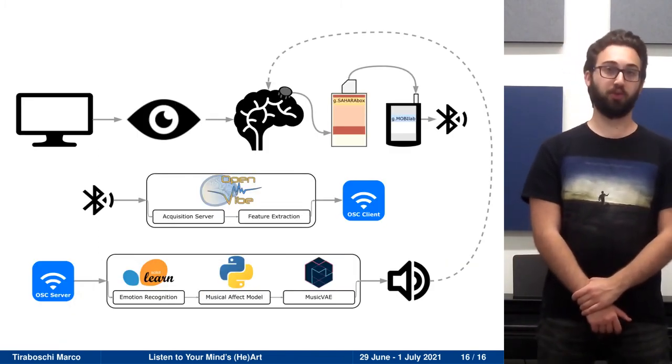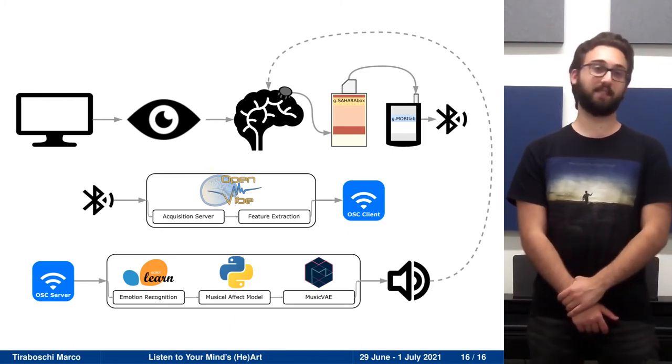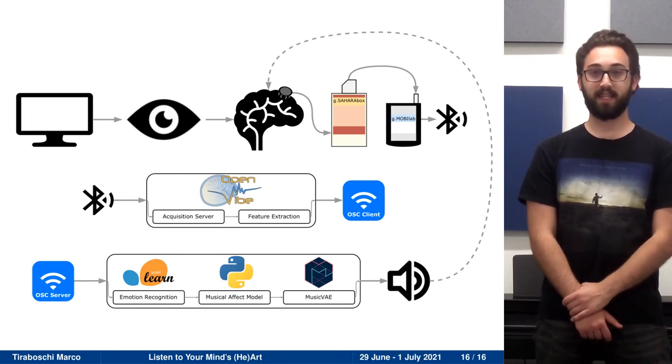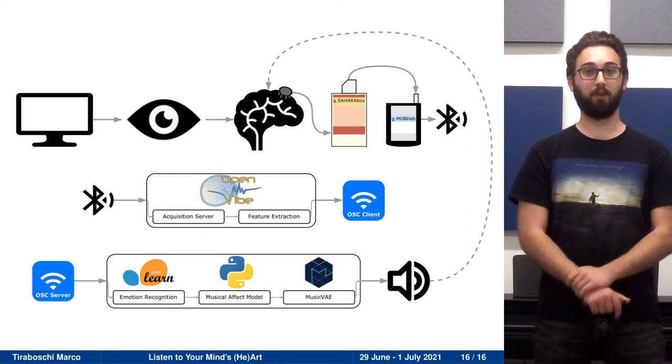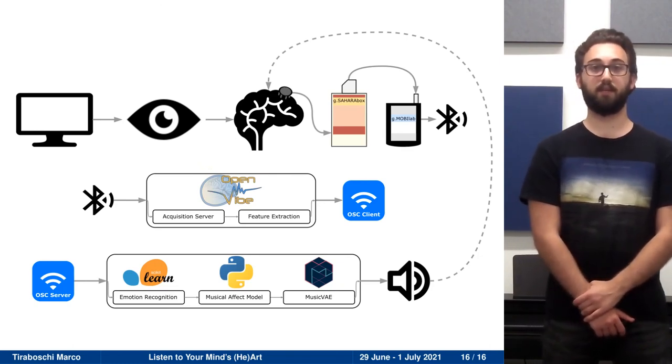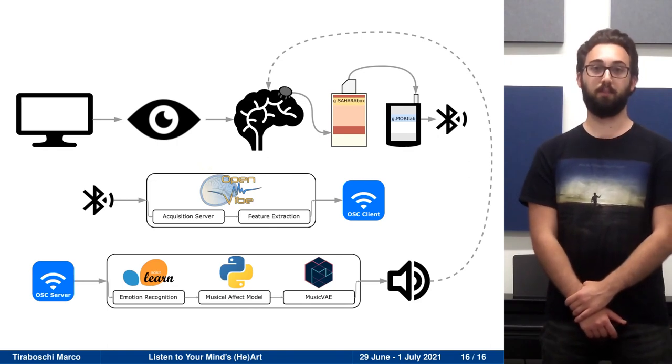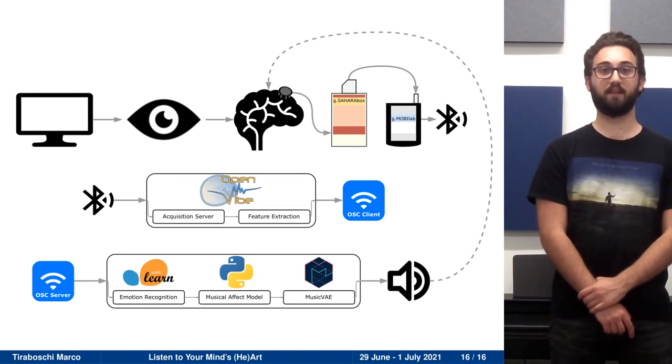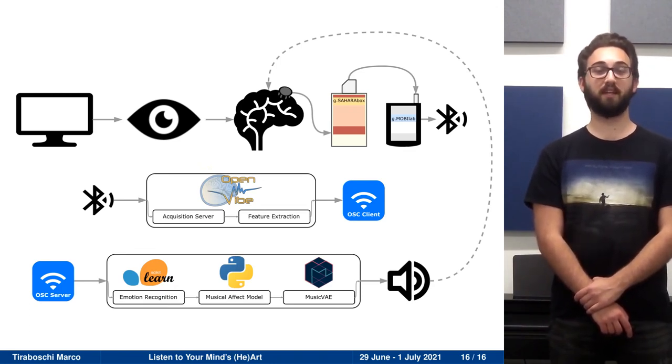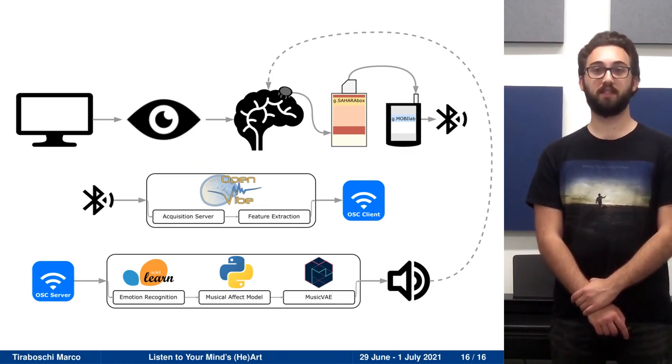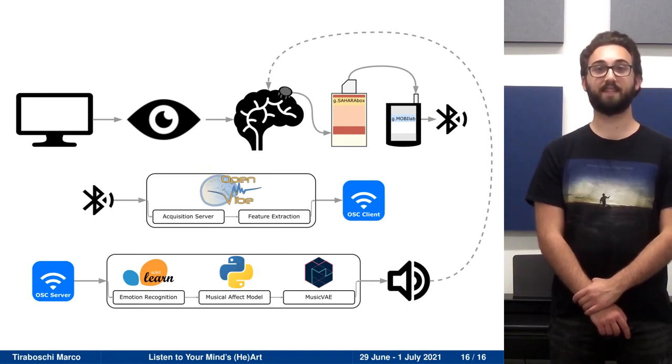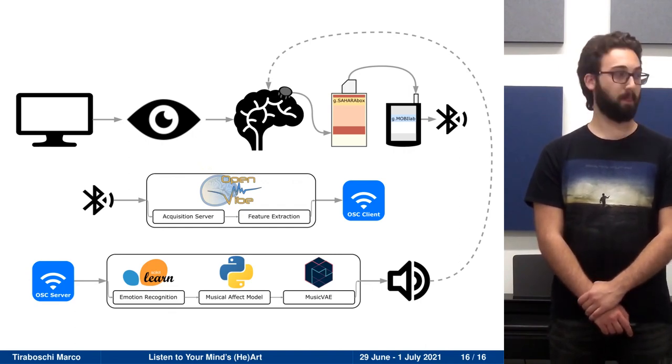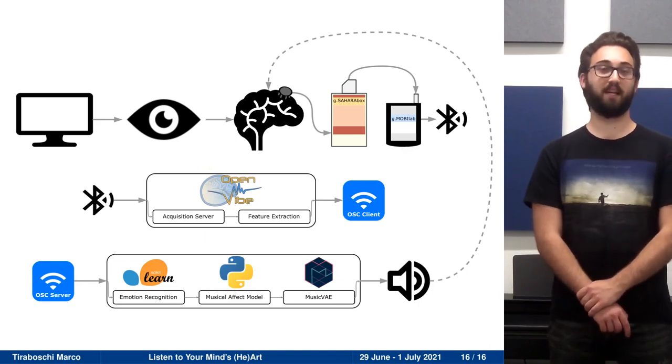To recap, now I will show you a diagram of the entire system. The user's brain activity is captured with the EEG hardware. The raw EEG data is then sent to OpenViBE. In OpenViBE, we are performing the feature extraction and we are sending the features via OSC to our Python application. Our Python application runs an OSC server to receive those features and uses EEG features to recognize the user's affective state. Then it maps the user's affective state to MusicVAE latent features. The feature vector is then input to MusicVAE and the MIDI is then sent to a MIDI sequencer so that the user can then hear the generated music in real time. So thank you for watching and if you have any questions, please ask them in the Q&A later.